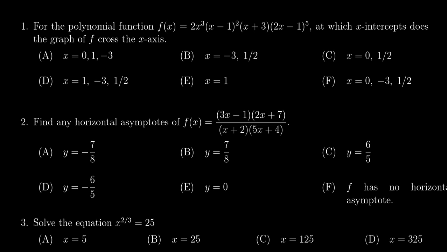If you're looking for x-intercepts, that's the same thing as looking for the roots. The roots come from the factors, so we can see the x-intercepts right here. There's an x-intercept of 0, 1, negative 3, and 1 half.